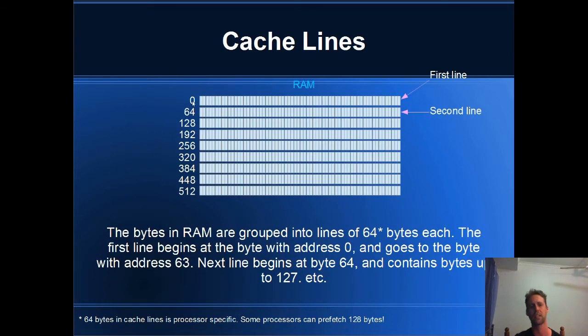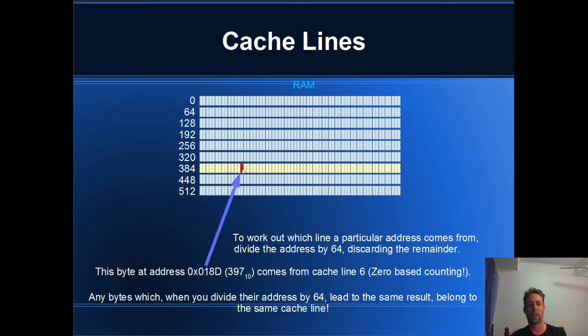All right, so the cache lines are just numbered 0 through to 80 billion or whatever. The first one starts at address 0 in RAM and goes all the way up to byte number 63. And then the next cache line starts at byte number 64 and goes all the way up to byte number 127. So if you want to figure out what cache line a byte belongs to, then you can just divide its address by 64 and discard the remainder.